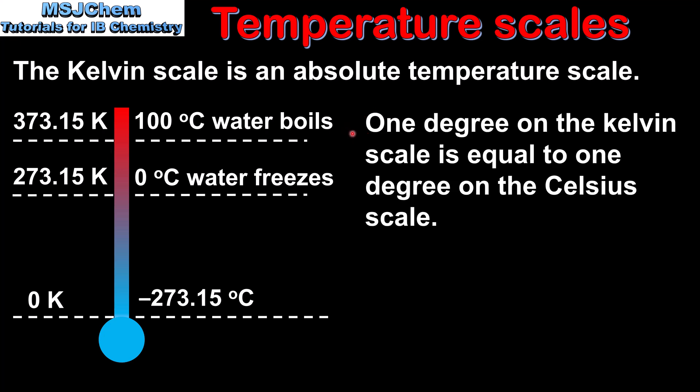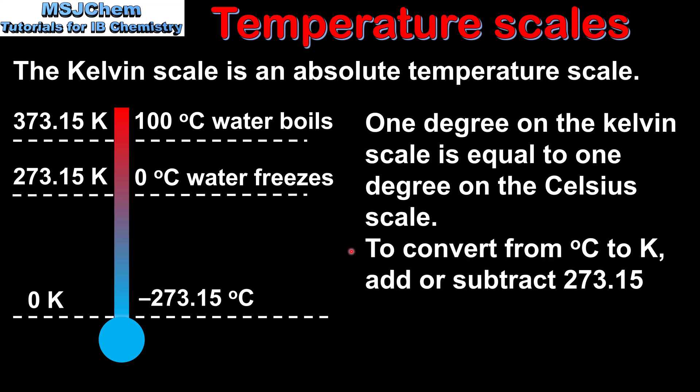One degree on the Kelvin scale is equal to one degree on the Celsius scale. So if you have an increase in temperature of 10 degrees C, that corresponds to an increase in temperature of 10 Kelvin. To convert from degrees C to Kelvin we add or subtract 273.15. For example, 25 degrees C is equal to 298.15 Kelvin.